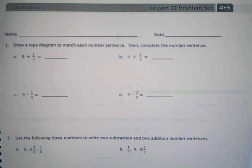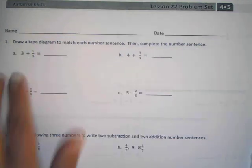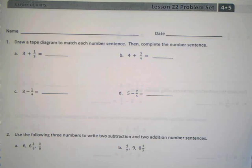All right, it says draw a tape diagram to match each number sentence, then complete the number sentence. All right, so let's start with A. Three plus one-third. What do I need to draw first? Corvian?